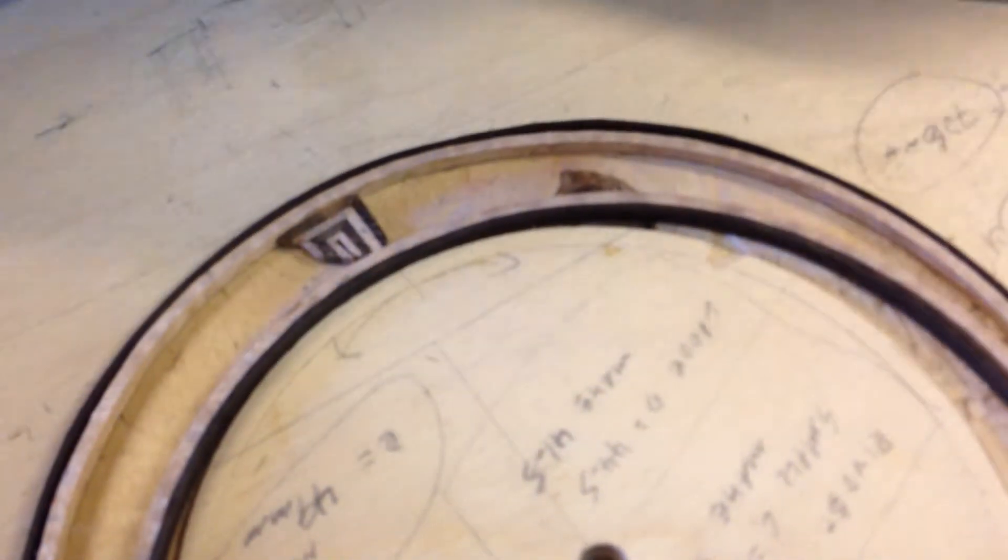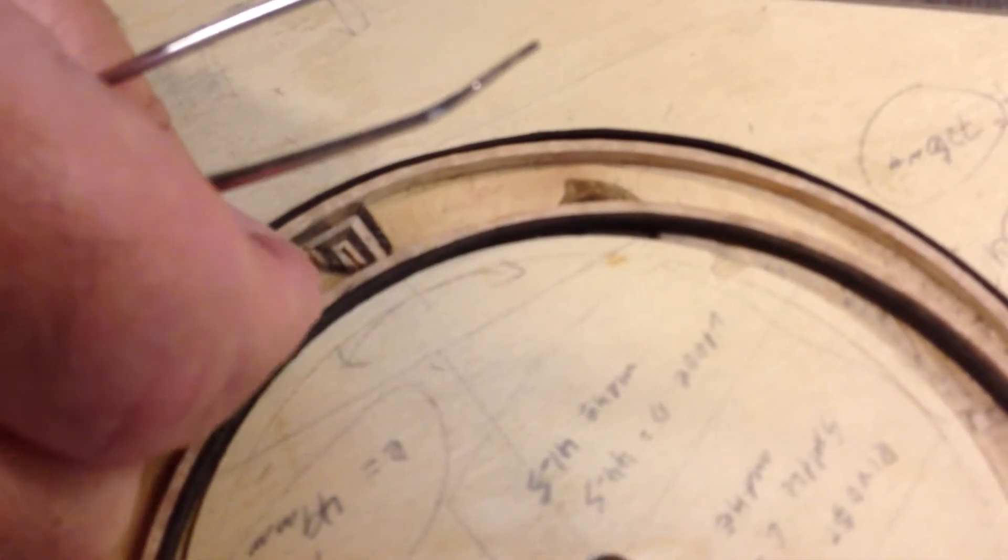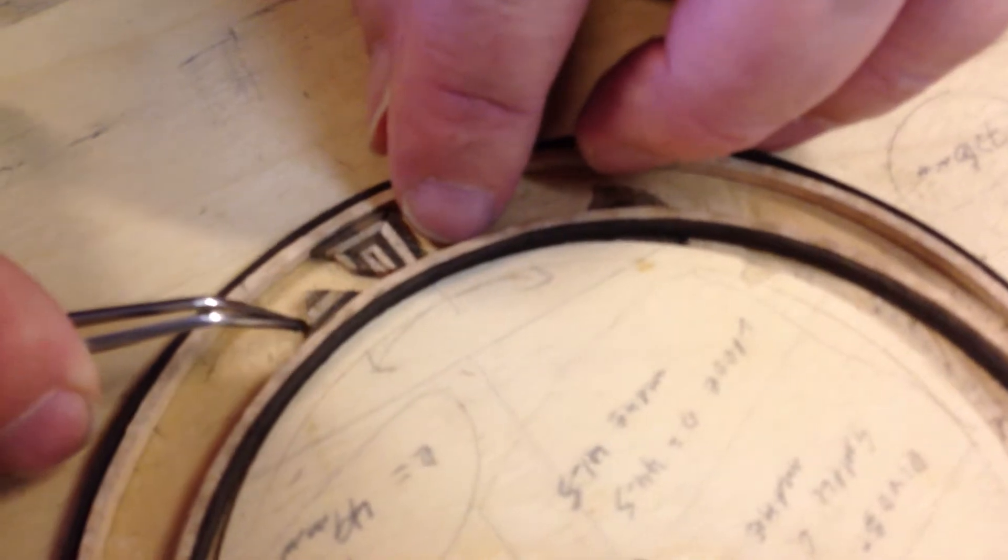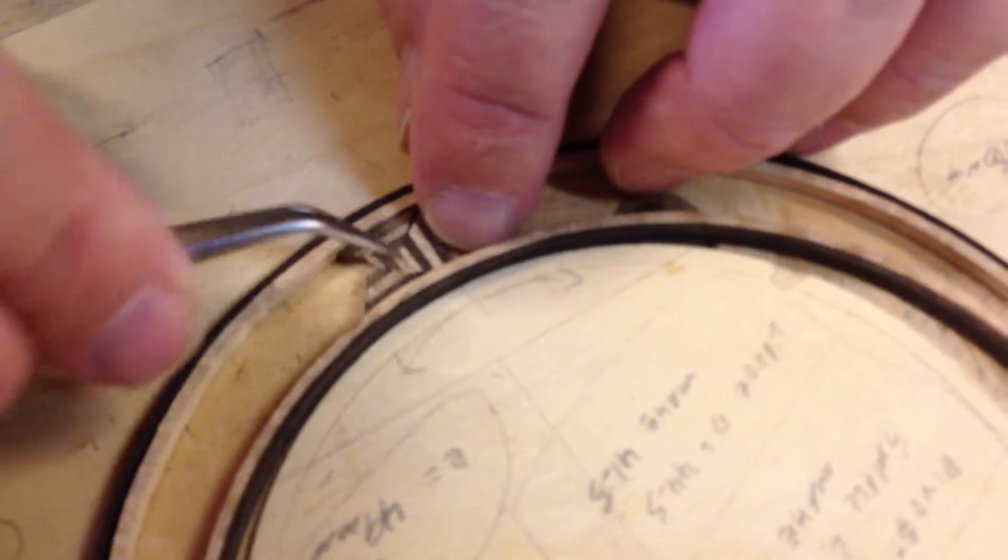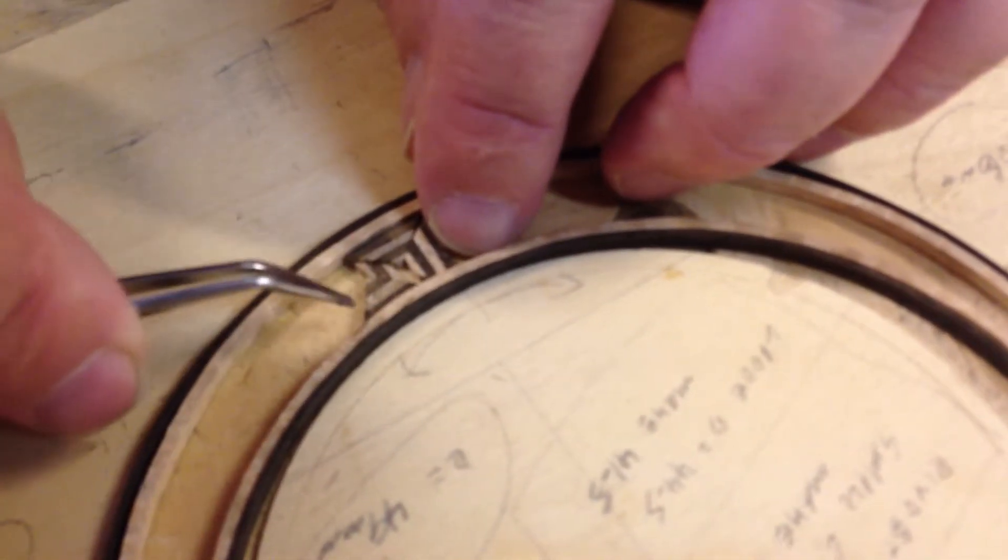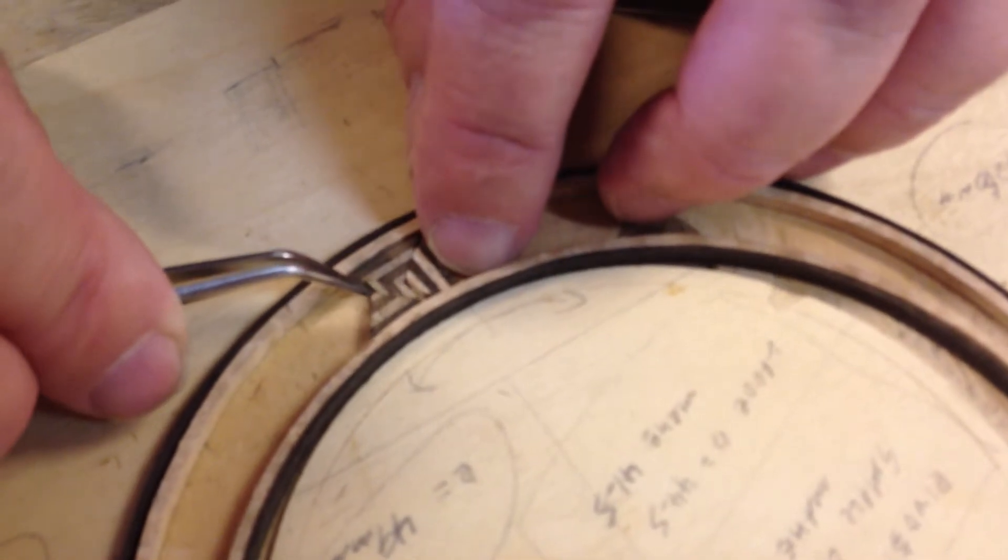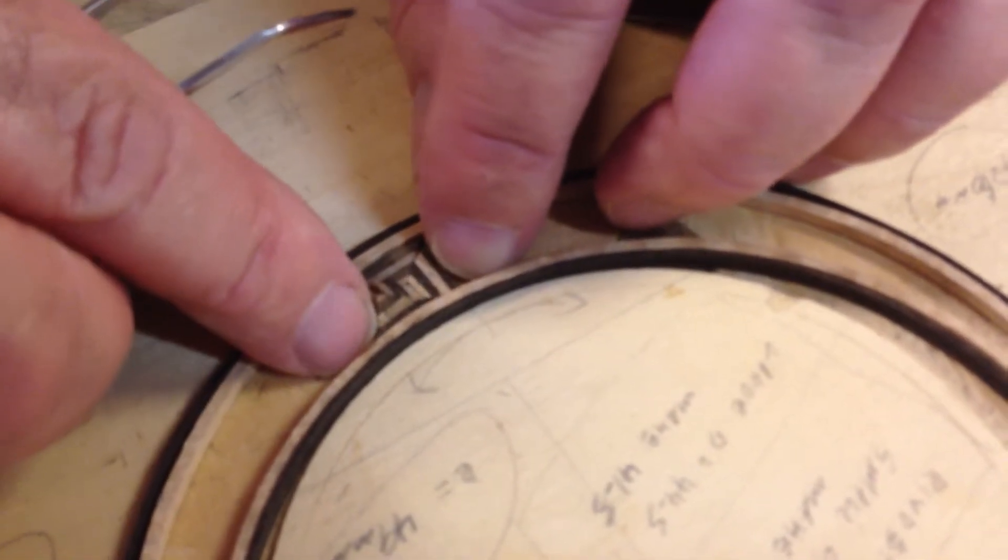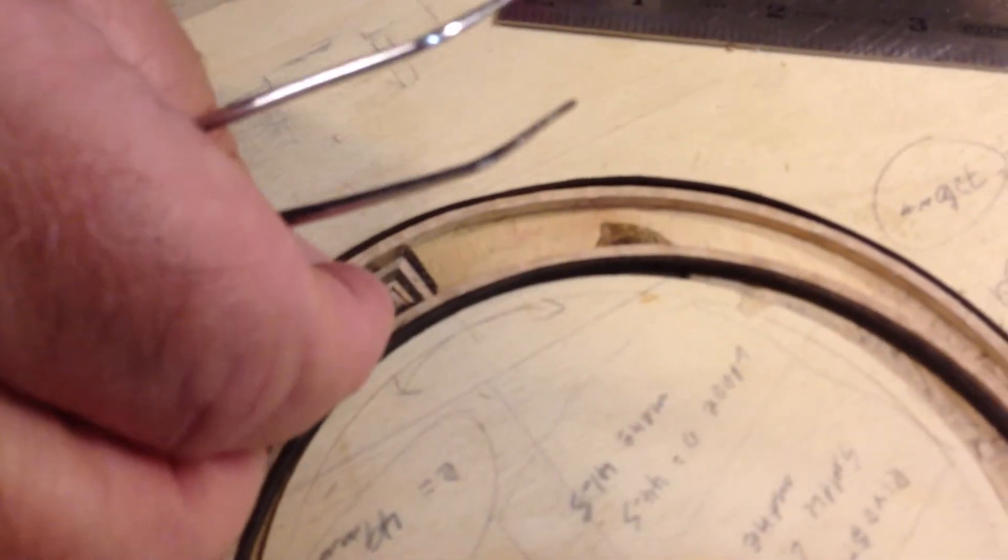And then beta slides in like so. It's a fairly delicate operation to get everything to fit properly. And then finally, the end piece, which is gamma.